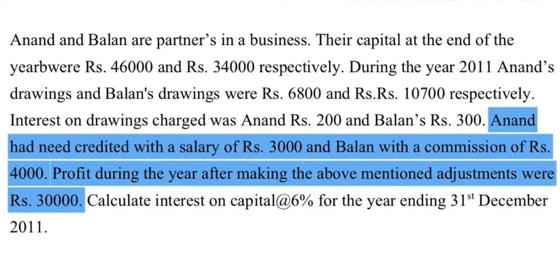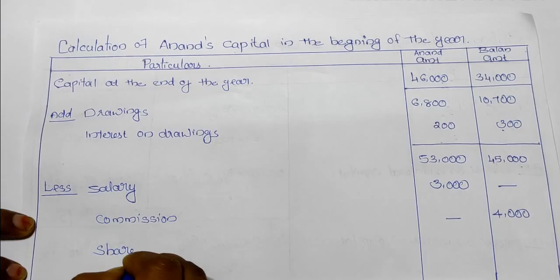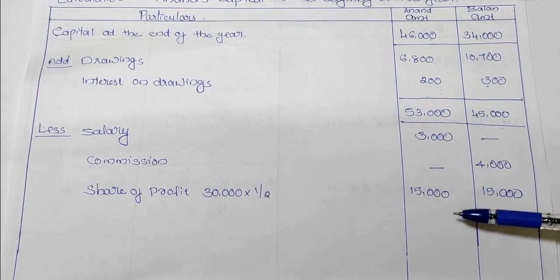Next, we will discuss the share of profit. Profit during the year after making the above-mentioned adjustments was Rs. 30,000. The adjustment amount is $35,000. We assume the amount of profit is equal to $50,000. So, $30,000 divided into $50,000 and $50,000. That is why we have deducted items.